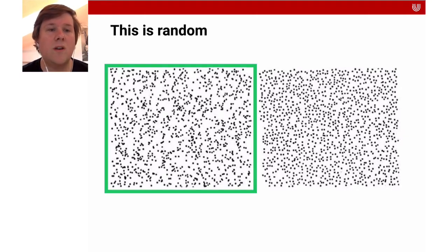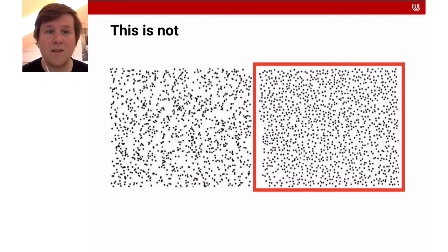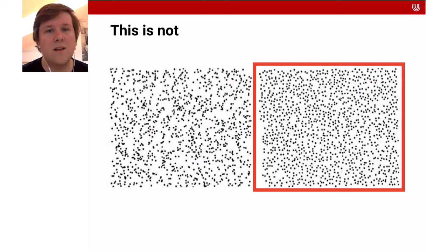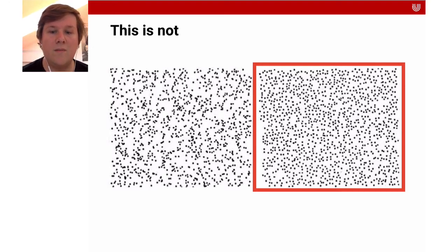This one is actually the data that is randomly distributed, whereas this one is not randomly distributed. Nevertheless, a lot of people think the one on the right is more likely to be random because all these points are neatly spaced from each other, whereas on the left we have these weird clusters. That's a bit against our intuition about randomness — but that's really what randomness is. We can't really predict where things go, and we don't always have nice patterns in random data.